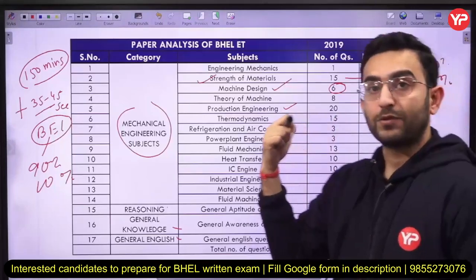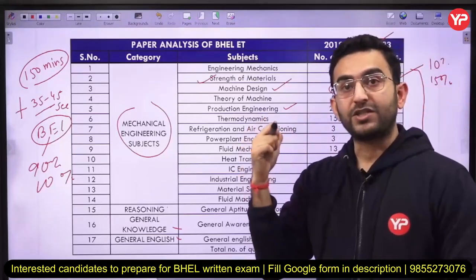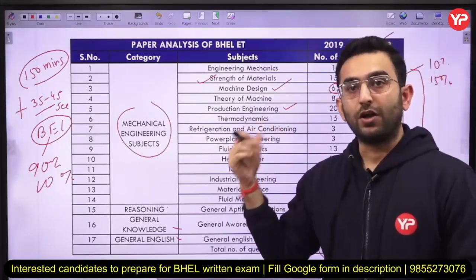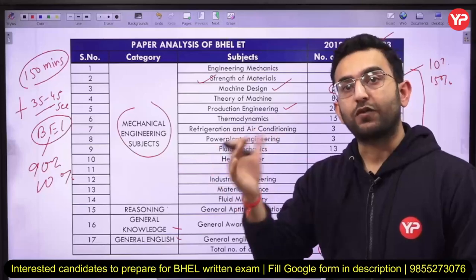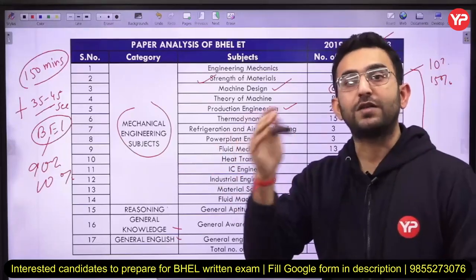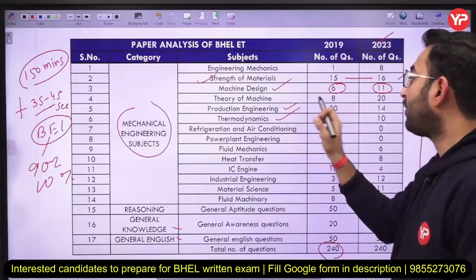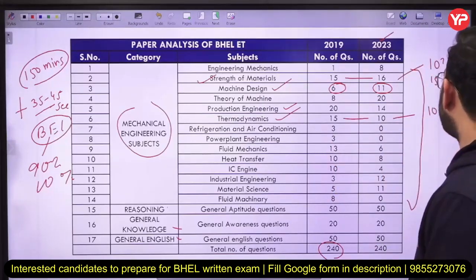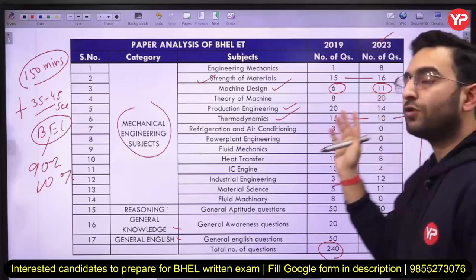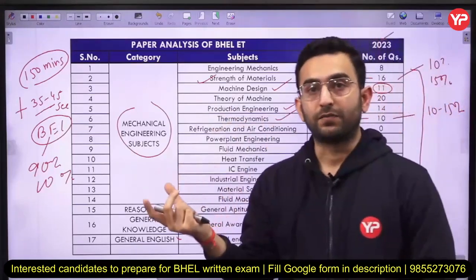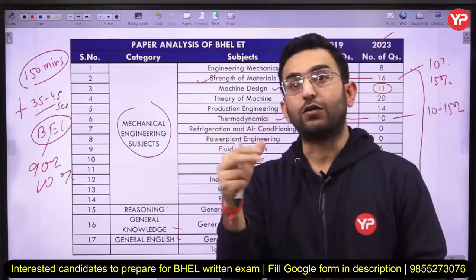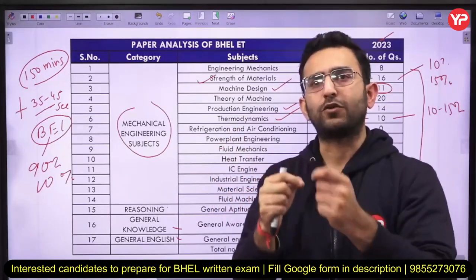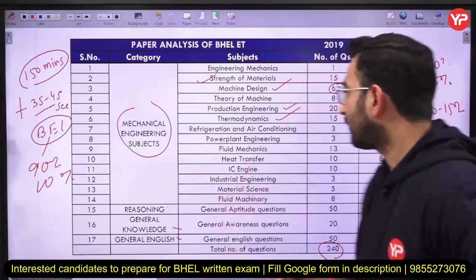Specifically for BHEL, don't expect only theoretical questions in production engineering — a lot of numericals have been asked from casting, welding, and metal cutting. In thermodynamics, you can again expect around 10 to 15% weightage, and a large number of numericals have been asked. The level of numericals is also quite high, so don't think that just solving basic numericals will be sufficient.